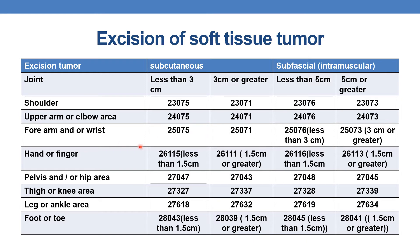For forearm and/or wrist: for subcutaneous tumor, if less than 3 centimeters the CPT is 25075; if 3 centimeters or greater, it is 25071. For subfascial or intramuscular tumor of forearm and/or wrist, the diameter threshold is different — if less than 3 centimeters, CPT is 25076; if 3 centimeters or greater, it is 25073.